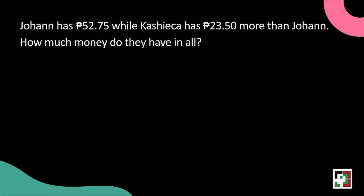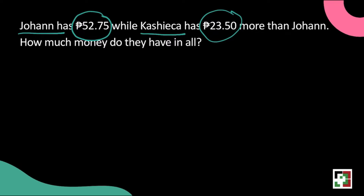Let's have the first problem. Johan has 52 pesos and 75 centavos while Kashika has 23 pesos and 50 centavos more than Johan. How much money do they have in all? Let's take a look at our given. Johan has 52 pesos and 75 centavos while Kashika has 23 pesos and 50 centavos more than Johan. We have to find the total money they have.